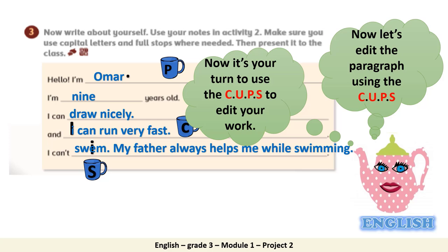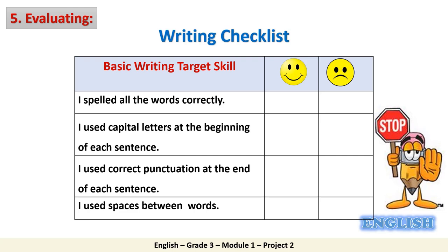And now let's move to step number 5, which is evaluating. In the evaluating step, you are going to assess your writing by using a writing checklist. Number 1: I spelled all the words correctly — if you did it, please put a happy face for yourself, and if not, it's fine, you can work on it next time. Number 2: I used capital letters at the beginning of each sentence. Number 3: I used correct punctuation at the end of each sentence. Number 4: I used spaces between words. So how many happy faces did you get?